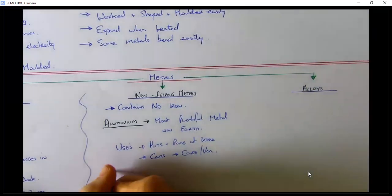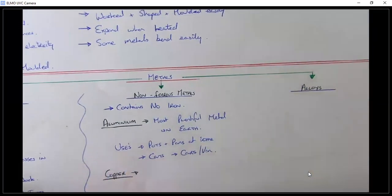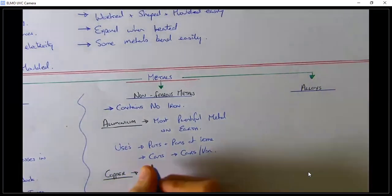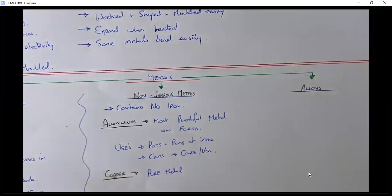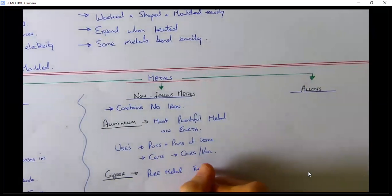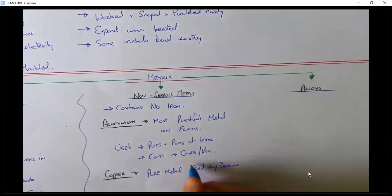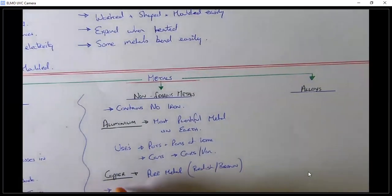The second type of non-ferrous metal is copper — copper piping is probably the one you'd recognise. Copper is a pure metal, meaning it's extracted from the earth in its own right. The colour of copper, if you're not sure, is a reddish-brown colour. If you see a metal that's reddish or brown, that's most likely copper.